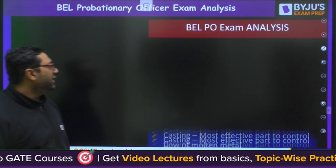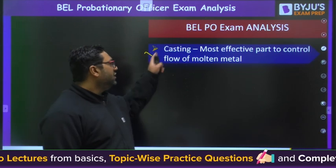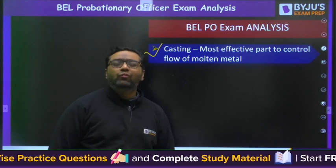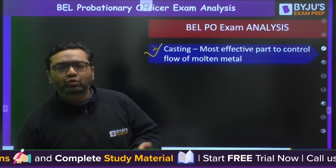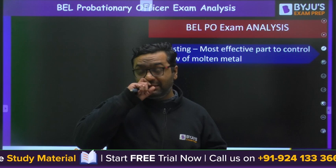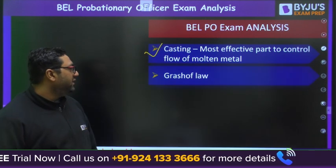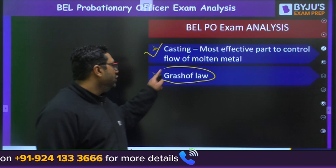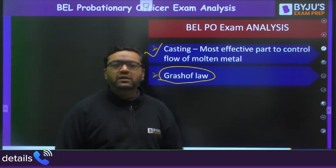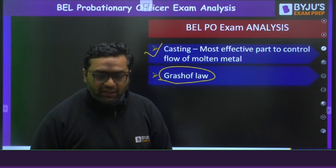Moving to the next topic — from casting, they asked about the most effective part to control the flow of molten metal: whether it is sprue, pouring basin, runner, or ingate. Then they were asking about Grashof's law from theory of machines. In whatever mock tests we have taken, we were also having questions from Grashof's law.